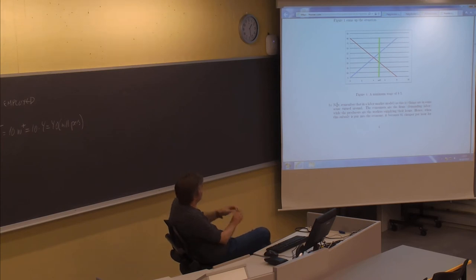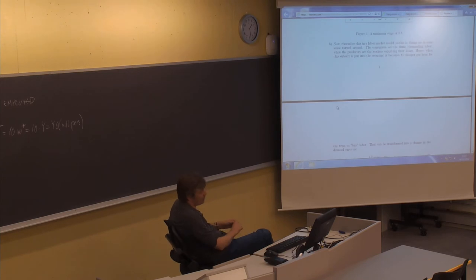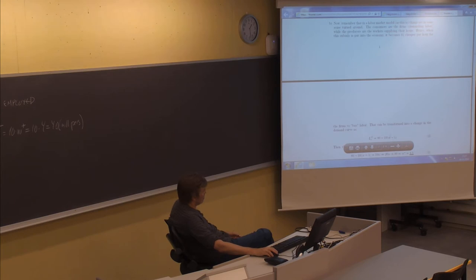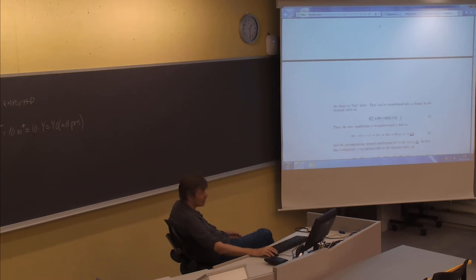Remember that in a labor market model, things are in some sense turned around. The consumers are the firms demanding labor while the producers are the workers supplying their working hours. Hence, when the subsidy is put into the economy, it becomes $1 cheaper per hour for the firms to buy labor. That can be transformed into a change in the demand curve by just subtracting one from the original W in the demand equation. We have the same supply curve of 10W, and then we can straightforwardly find the new equilibrium. The key to solving these exercises is really to be able to state these transformed equations correctly.